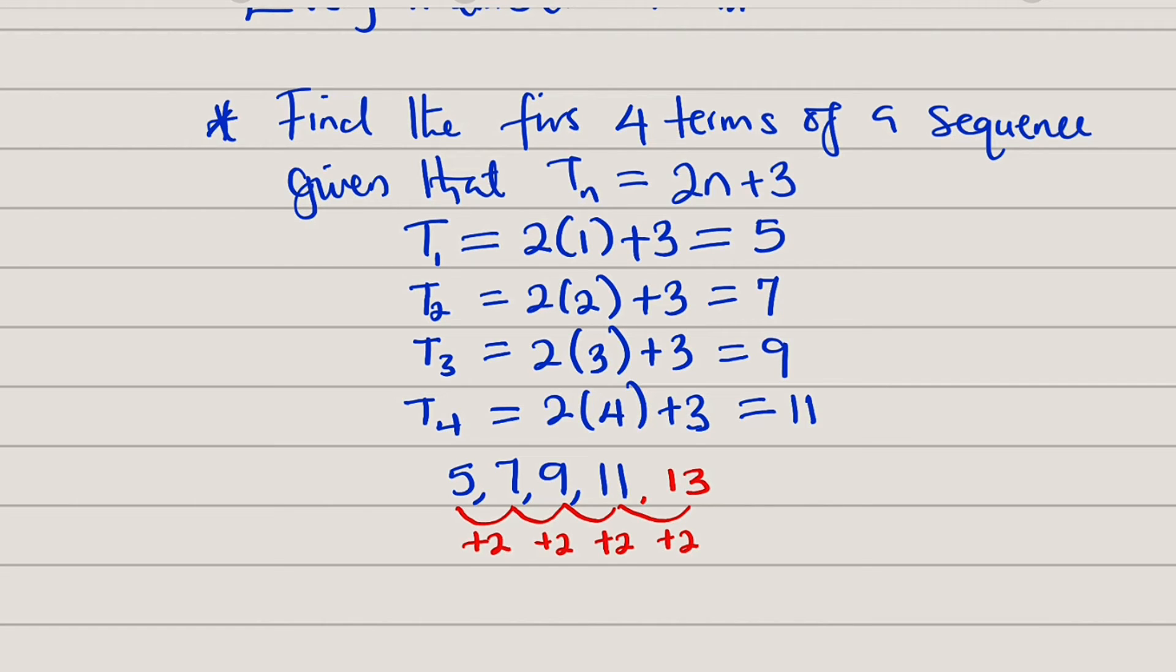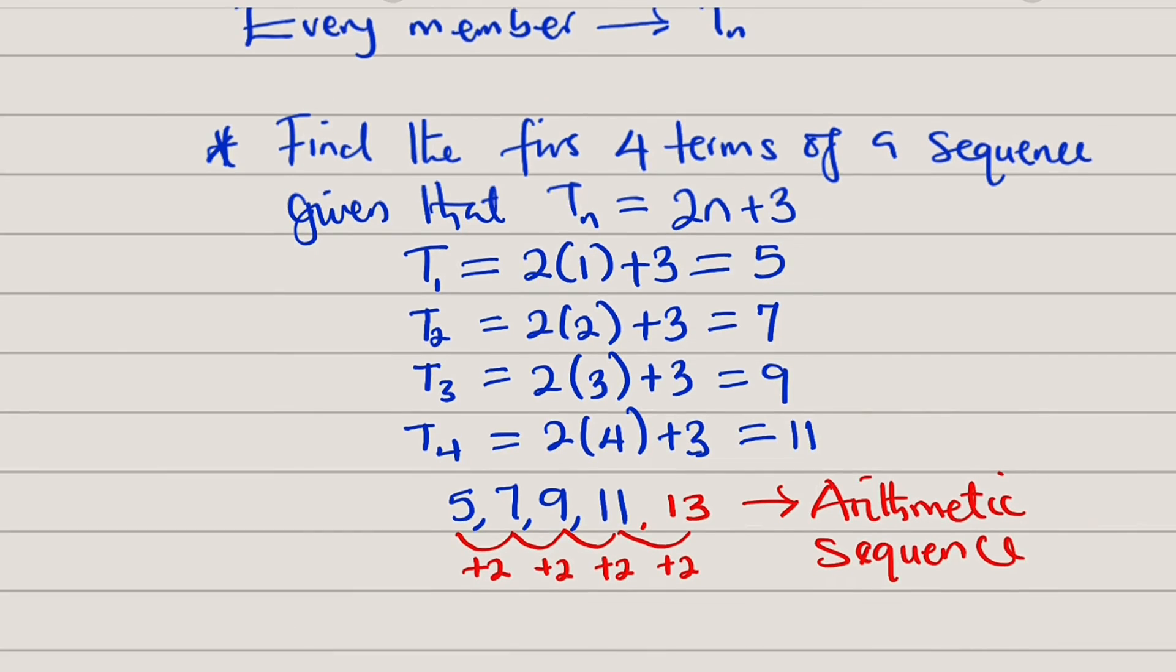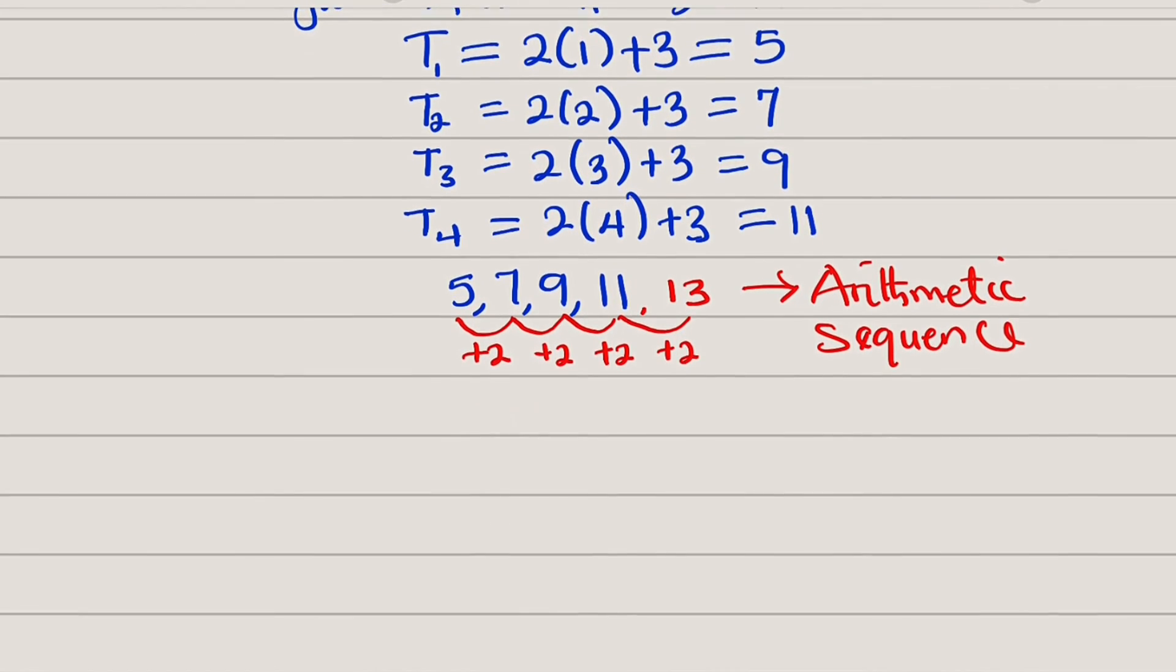So, whenever you have a constant common difference, because the difference between every two is equal to 2, that sequence is said to be linear sequence. Or in another word, we say it is arithmetic sequence. So, this is arithmetic sequence. So, this is just an introduction to sequence.